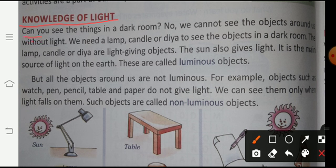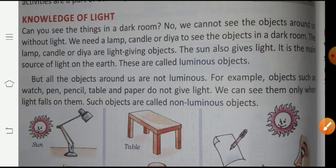Can you see things in a dark room? When you are in a dark room where there is no light — at night, when the light goes off — do you see anything? Your answer is no. We cannot see the objects around us without light.